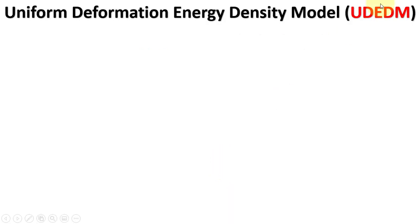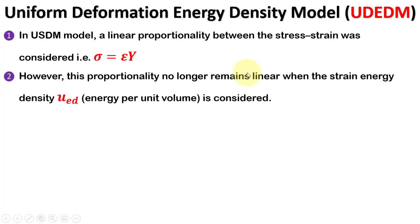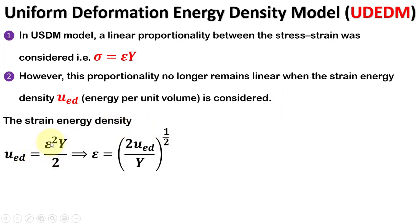In the USDM model, we considered a linear proportionality between stress and strain: sigma equals epsilon times Y. However, this proportionality no longer remains linear when a strain energy density, UED, is considered. This strain energy density is related to the strain as: UED equals epsilon squared times Y over 2. So, epsilon equals the square root of 2 times UED over Y.